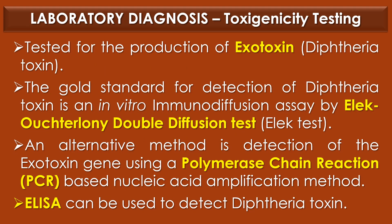Toxigenicity testing for Corynebacterium diphtheriae. All isolates should be tested for production of diphtheria toxin. The gold standard for detection is an in vitro immunodiffusion assay — the Elek immunodiffusion test (Elek test). An alternative method is detection of the toxin gene using polymerase chain reaction (PCR) or nucleic acid amplification. Finally, ELISA can be used to detect diphtheria toxin from clinical Corynebacterium diphtheriae isolates.